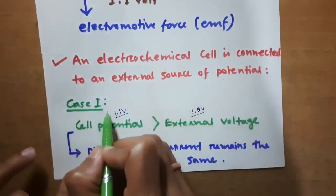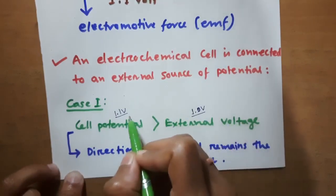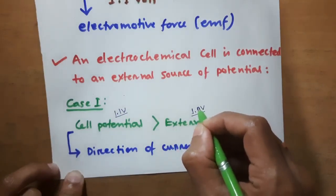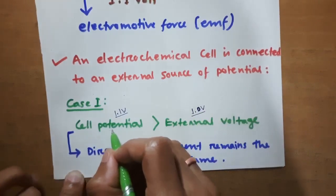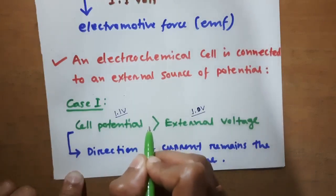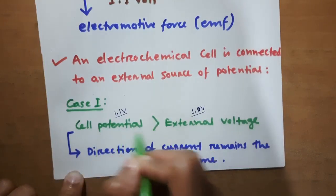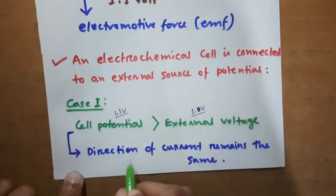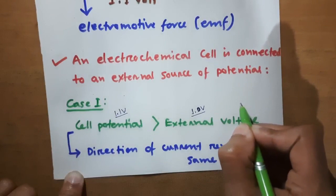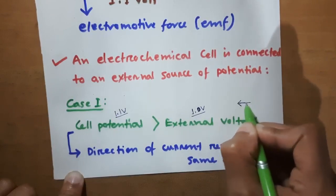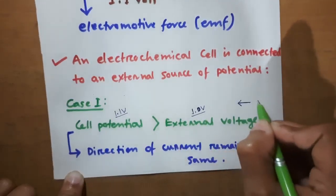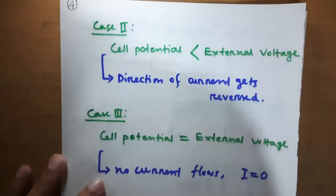Case 1: when cell potential is greater than the external voltage. The cell potential of the Daniel cell is 1.1 volts. Suppose we connect a battery of 1 volt, whose potential is lower than that of the electrochemical cell. Then the direction of current remains the same — from right to left in the Daniel cell.